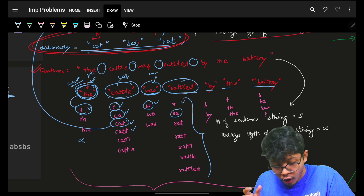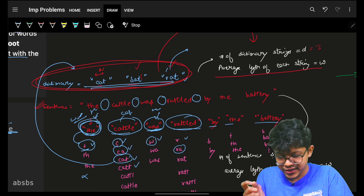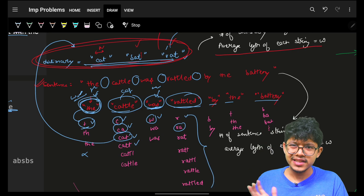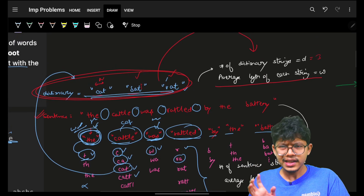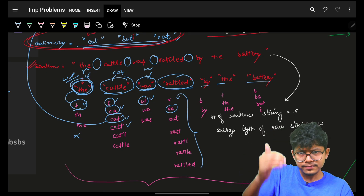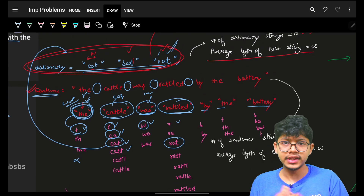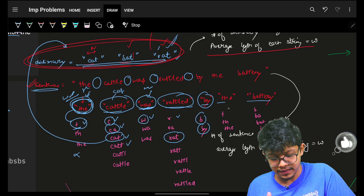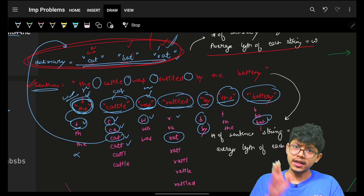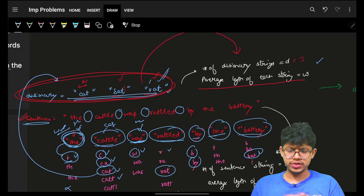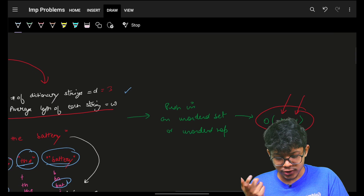You can either try all possible prefix substrings and store them in a hash map, or go and try all prefix substrings of the sentence words while looking up the dictionary hash map. I recommend using less space: keep the dictionary in the hash map and iterate over prefixes of each sentence word. For 'by': 'b' is there but 'y' is not so return 'by'. For 'battery': 'b', 'ba', 'bat' — found, so answer is 'bat'. Final answer: 'the cat was rat by the bat'.